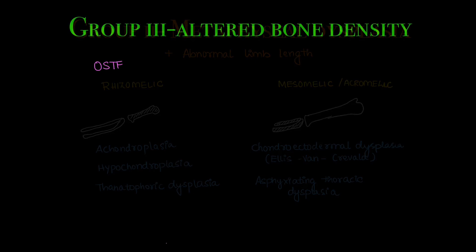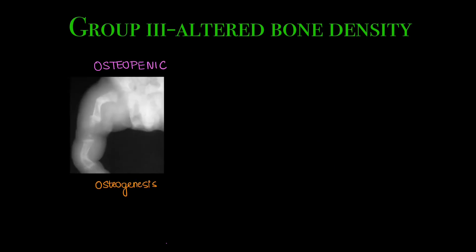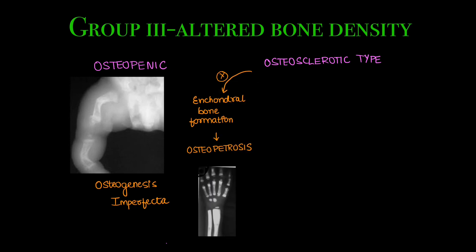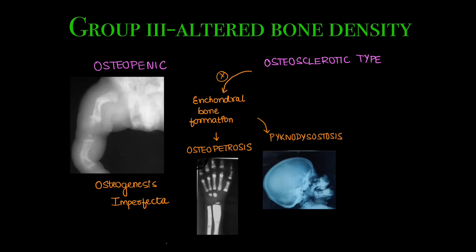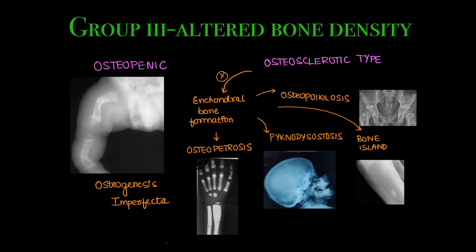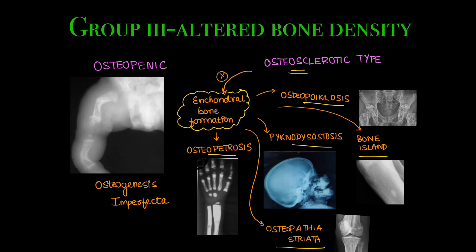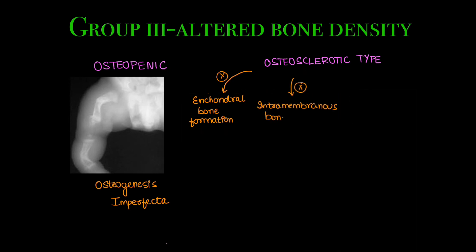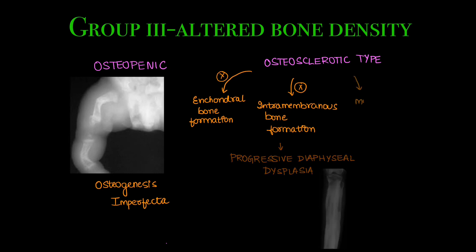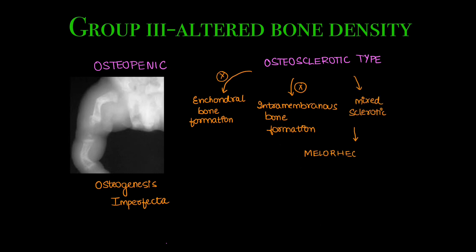Group 3 has dysplasia which show altered bone density — either osteopenia or osteosclerosis. Osteopenia is seen in osteogenesis imperfecta. Osteosclerosis has multiple types: defects in endochondral bone formation can result in osteopetrosis, pycnodysostosis, bone island or enostosis, osteopoikilosis, or osteopathia striata. A defect in intramembranous bone formation can result in progressive diaphyseal dysplasia, also known as Camurati-Engelmann disease. A mixed sclerotic type of disorder is melorheostosis.